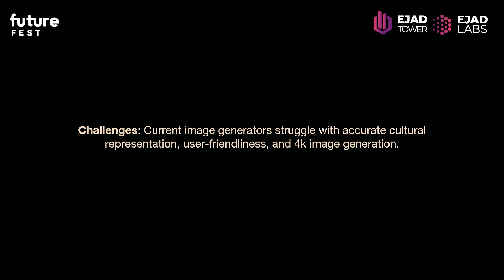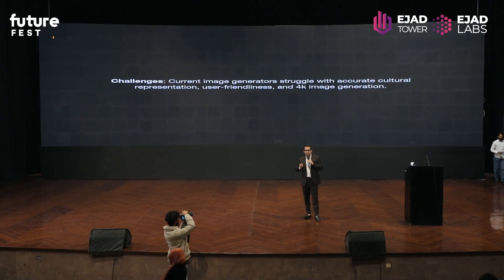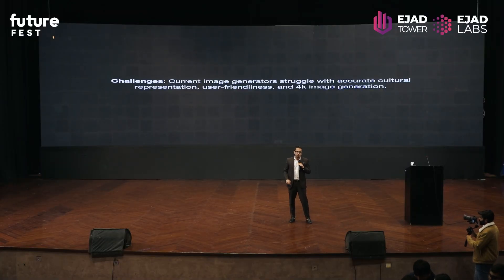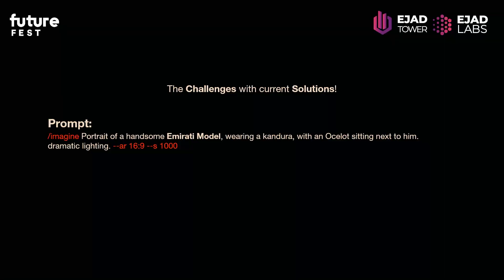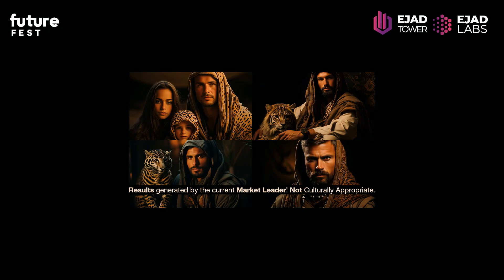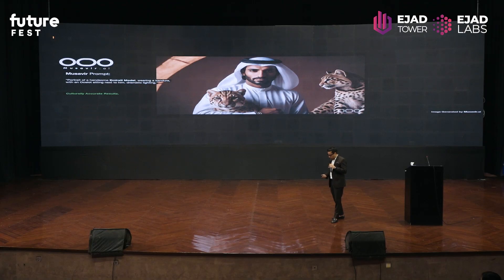There are other image generators out there, but how are we different? Musawir makes it easy to generate culturally diverse images — you can generate a Pakistani person, an Emirati, Chinese — which is not very good in other generators. We also make it very user-friendly and generate very high-res imagery. For example, if you give Midjourney the prompt to generate a portrait of a handsome Emirati model, this is what you get — he doesn't look Emirati, he's not wearing Emirati clothes, and it's not culturally appropriate. But if you give the same prompt to Musawir, the dressing is proper and the person looks exactly Emirati. This is one of the challenges that we solved.